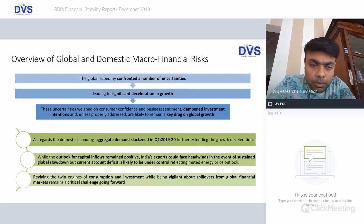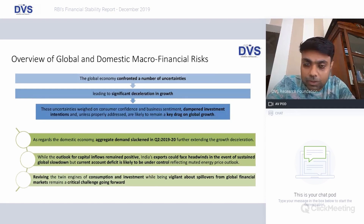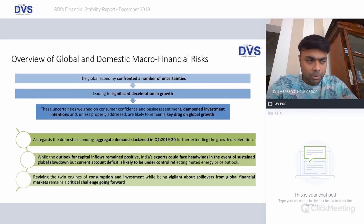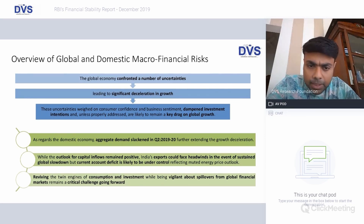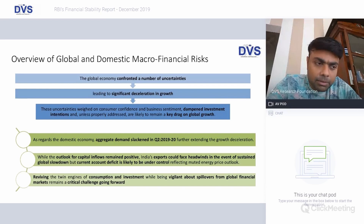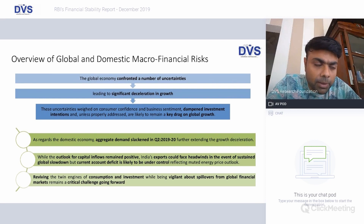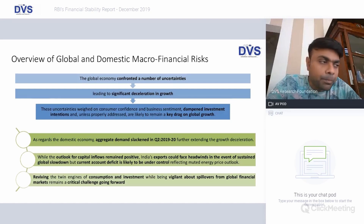The outlook for capital inflows remains positive — India is still considered an attractive FDI jurisdiction — but FDI is only about 50 billion dollars, which is minuscule compared to the size of India's economy. India's exports could face headwinds in the event of a sustained global slowdown. Technically, if global growth is at 2 to 3 percent, we cannot expect people to consume more Indian goods abroad.